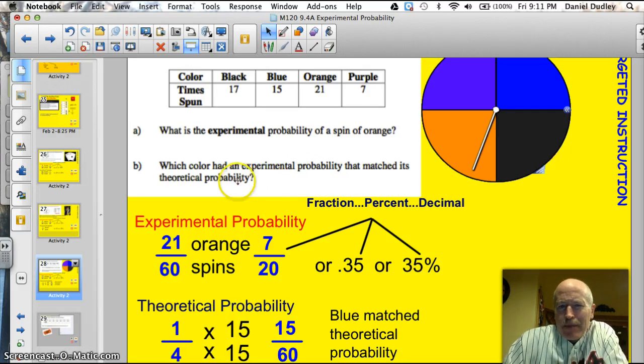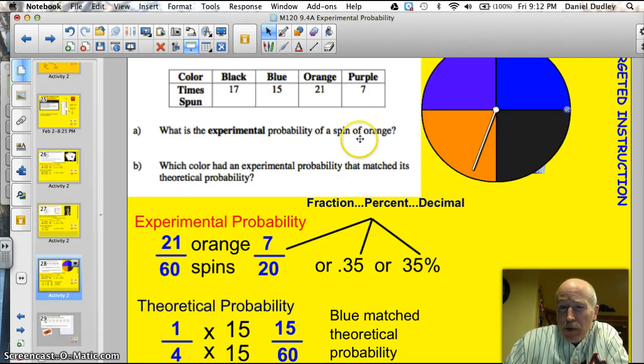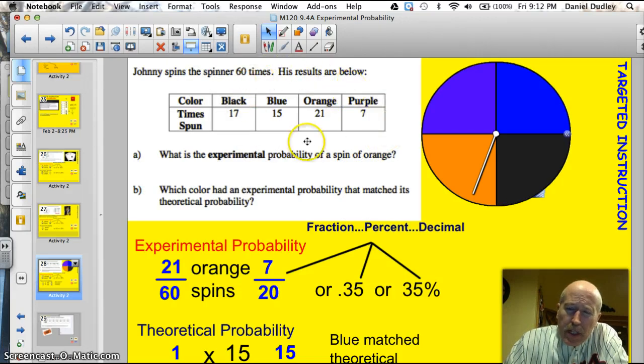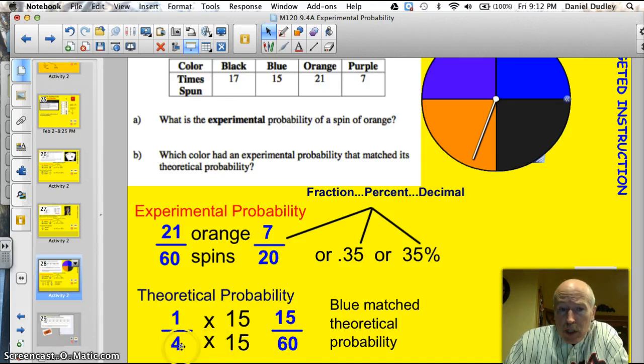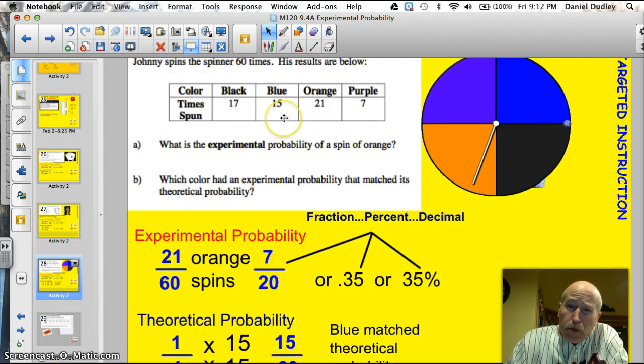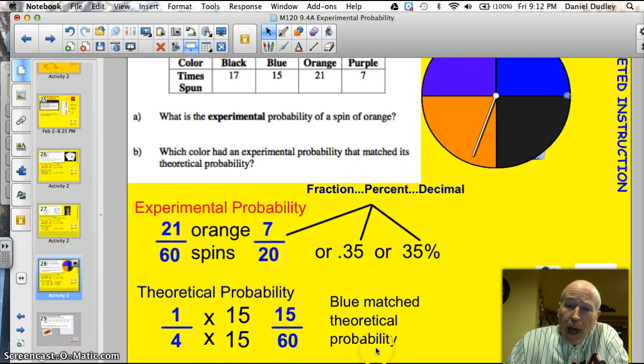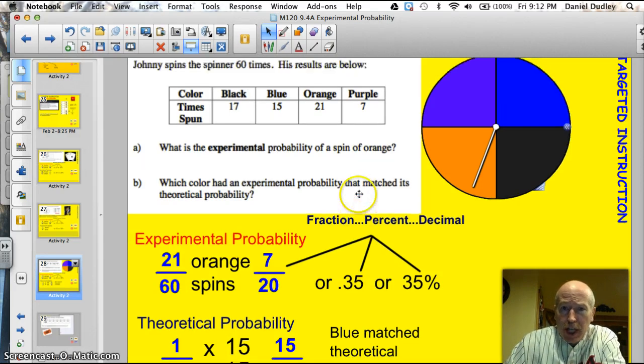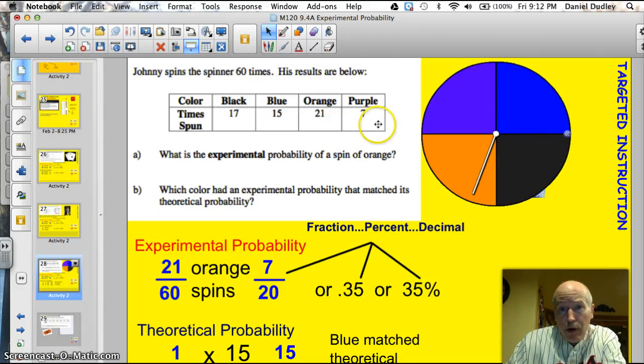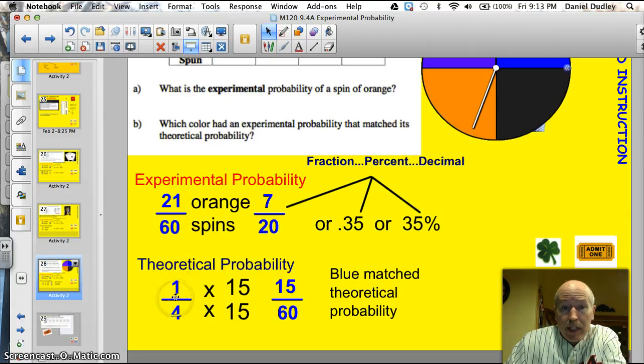All right, what's question B? They like doing this. Which color had an experimental probability that matched its theoretical probability? So now we've got to think about which one of these numbers was at 25%. Well, what I do is I just take the theoretical probability. It's a 1 in 4 chance. Now, what do I have to multiply that denominator by to get to 60? Well, 15. So I multiplied 4 times 15 to get to 60. And whatever you do to the bottom, you've got to do it at the top. So I multiplied the numerator by 15, too. And I found out that 1/4 is equal to 15/60. So if I look up on my data chart here, blue landed, the spinner landed on blue exactly 15 times. So blue actually matched the theoretical probability. See how I did that one? All right, that happens sometimes. And sometimes you can just look at it and go, well, there's 60 spins. If I divide 60 by 4, I'll get 15. Yeah, blue matched it. I like looking at setting up the equal fractions.